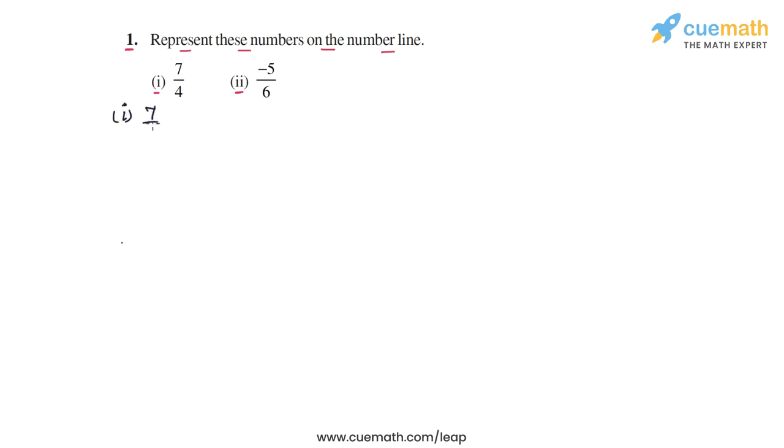In the first part, the number is 7 by 4. So you can think of it either as 7 into 1 by 4, or you can think of it as 1 plus 3 by 4. So 1 plus 3 by 4 also gives you 7 by 4. So you can interpret 7 by 4 in either of these two ways, and that will help you to plot this number on the number line.